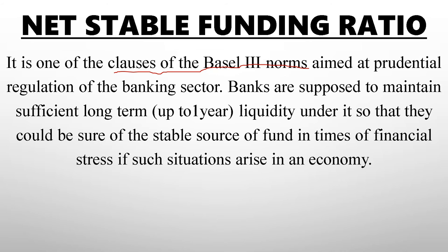The net stable funding ratio (NSFR) requires that banks maintain a sufficient amount of stable funding for one year. If there is any financial stress or problem, the bank should have enough money to cover that particular term. Basel norms are followed to ensure banks' non-performing assets do not grow excessively, and to meet obligations even in cases of financial stress.